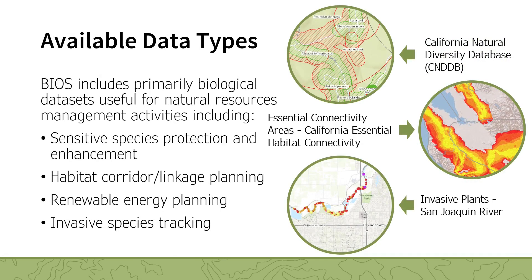BIOS includes primarily biological datasets useful for natural resource management activities. These include sensitive species protection and enhancement, such as CNDDB, fish ranges from the National Oceanic and Atmospheric Administration, and terrestrial species critical habitats from the U.S. Fish and Wildlife Service. Species connectivity modeling including habitat, corridor, and linkage planning. Renewable energy planning as seen in the Desert Renewable Conservation Plan viewer. Invasive species tracking, including the statewide analysis of invasive plants by QUAD from the Invasive Plant Council, and regional data such as invasive plants in the San Joaquin River. Also included is supporting data such as water quality readings and wind turbine data, which could be used for analyzing bird strikes.